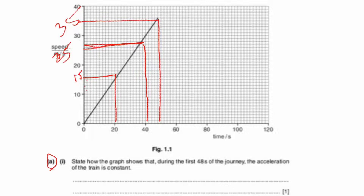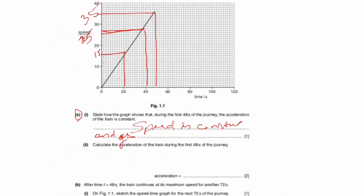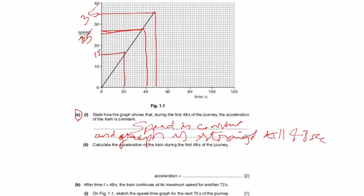Since the speed increment is constant everywhere, that means the rate of change of speed is constant. We can write that the speed is increasing at a constant rate, and also the graph is straight till 48 seconds. That is why the acceleration is constant. So that is done for the first part.